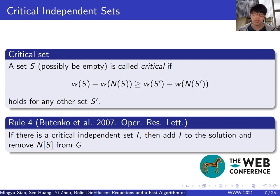Next, we have a rule called critical independent set. The rule is also used in many previous works. A set is called critical if the weight of the set minus its neighbors is the maximum one. It shows that all critical independent sets are contained in some maximum weighted independent sets and can be found in polynomial time.